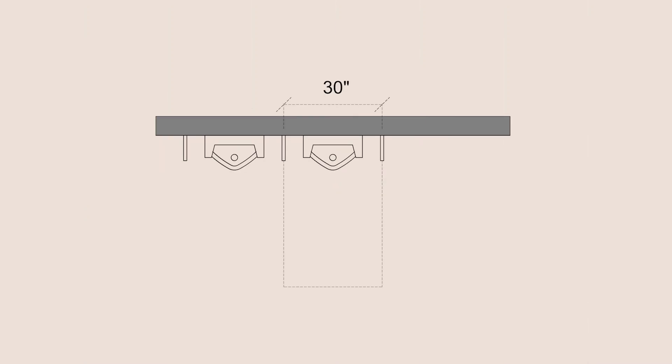Although not as commonly tested on the NCIDQ exam, it's helpful for you to know the standard requirements surrounding urinals. Similar to lavatories, a clear floor space of 30 inches by 40 inches must be provided. Urinal shields that do not extend beyond the front edge of the rim may be provided with 29 inches of clearance between them.